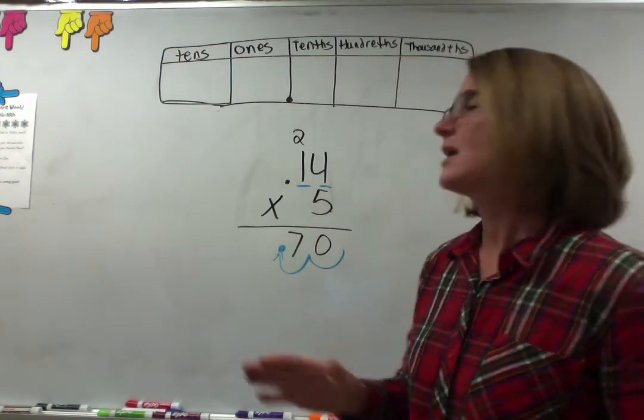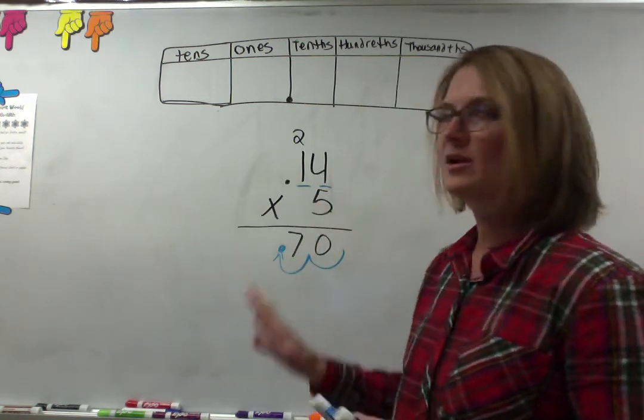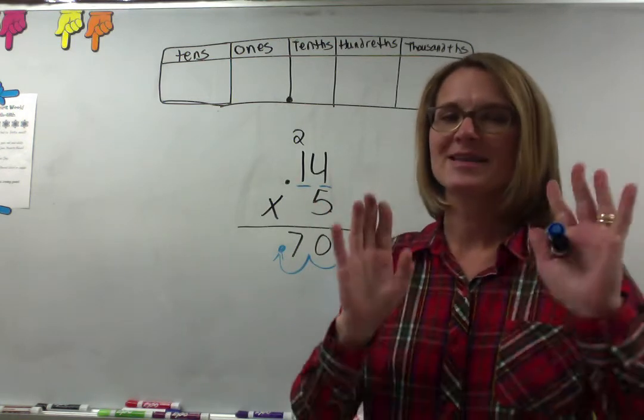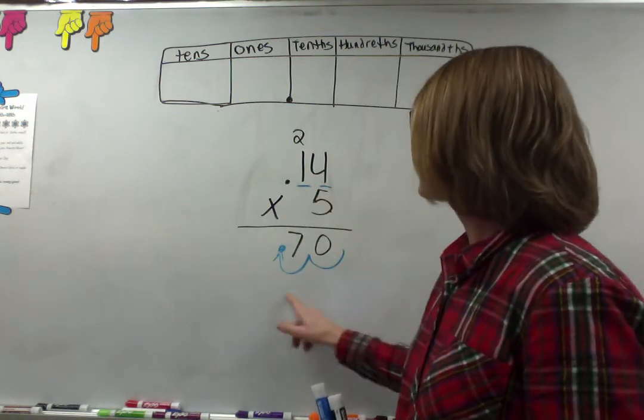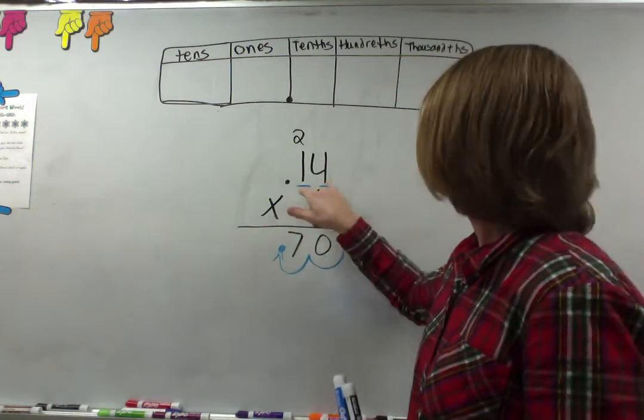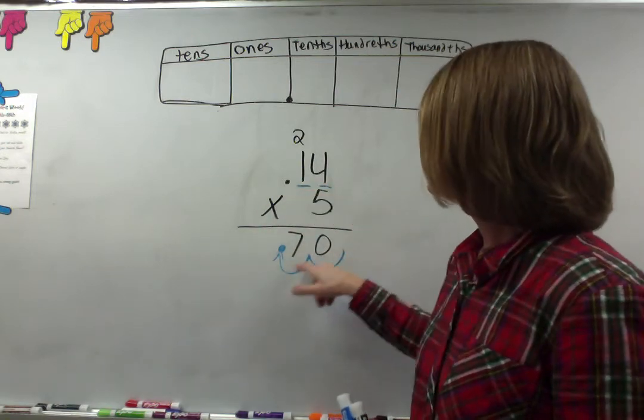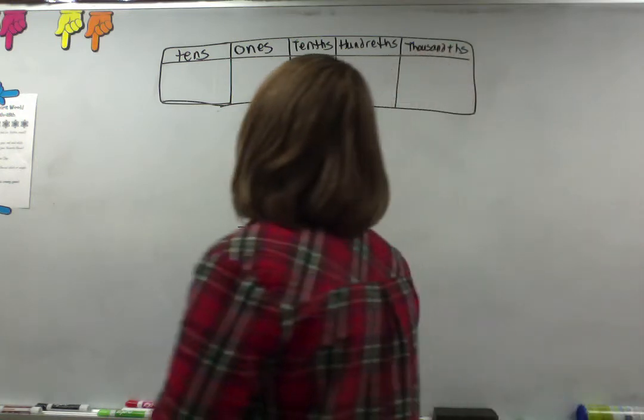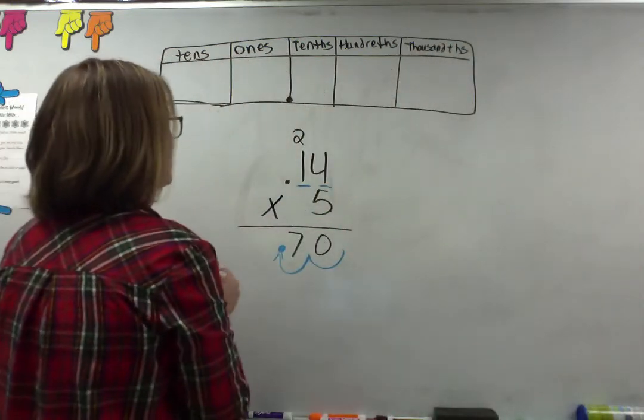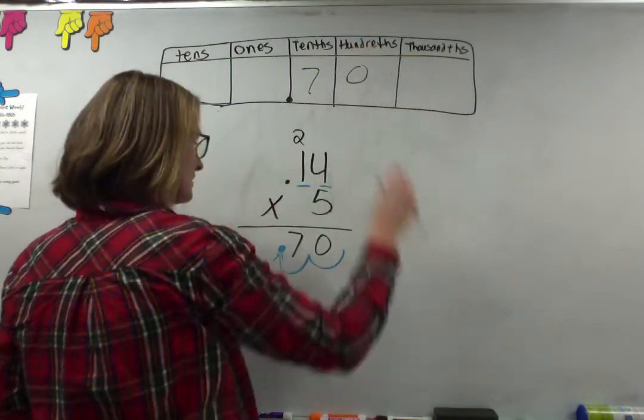It might seem like you're bringing the decimal straight down but it's not exactly what you're doing. You have a hundredths place here so you're making a hundredths place here. You have two places after the decimal here so you move your decimal in two places from the end.